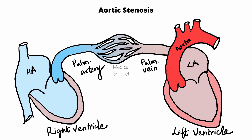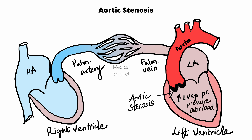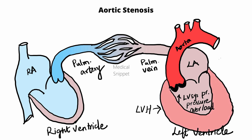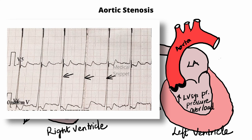ECG changes in aortic stenosis: In aortic stenosis, there is narrowing of the aortic valve orifice. This increases the left ventricular systolic pressure — that is, there is left ventricular pressure overload. Concentric left ventricular hypertrophy occurs as a compensatory mechanism. Left ventricular hypertrophy is seen in ECG as increased R wave voltage — more than 26 mm in V4, V5, and V6 — and ST segment depression and T wave inversion in V4, V5, and V6.